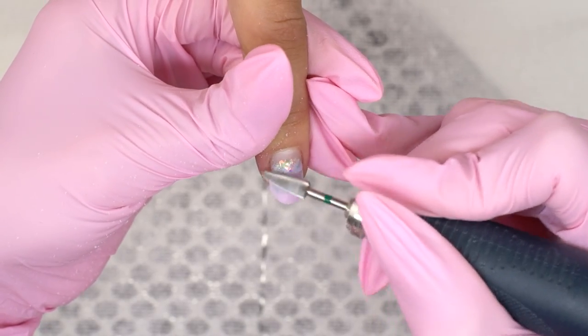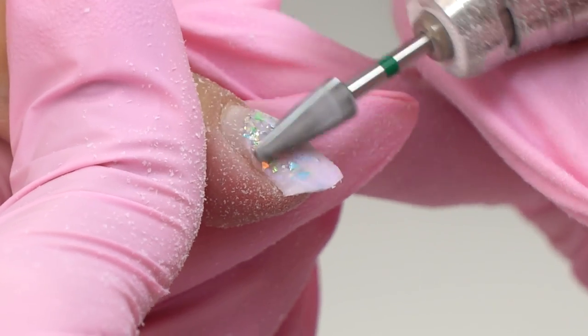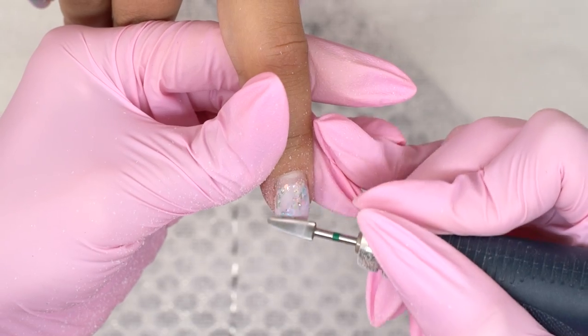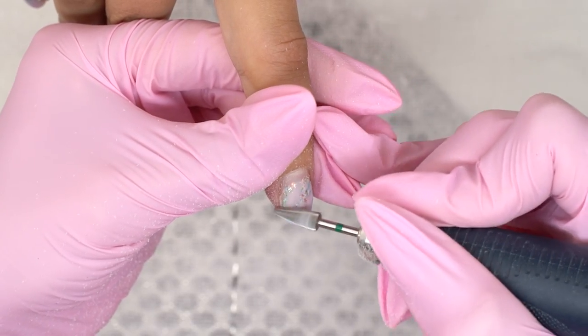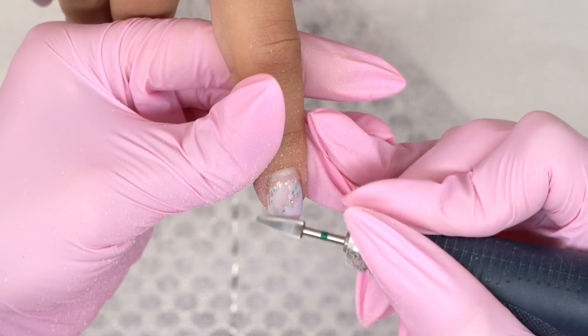Now I remove the coating and all the decor elements. For this purpose, I normally use a green carbide drill bit.